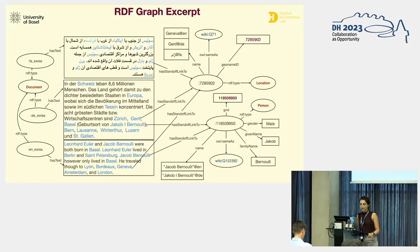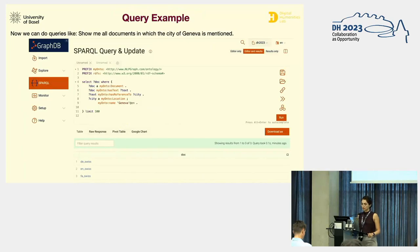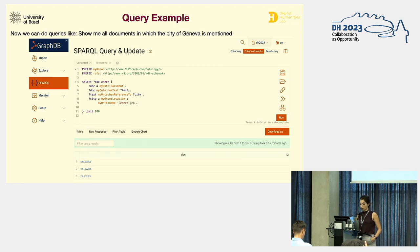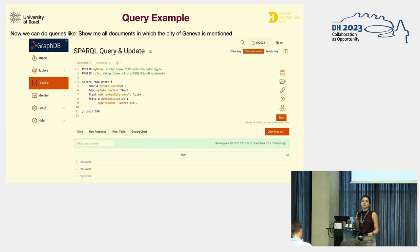After the graph is imported into the triple store — in this case we use GraphDB, which supports RDF Star — we can query it. We can ask for all documents whose text has a reference to a location with the name Geneva. The query result then contains all documents in English, Persian, and German.